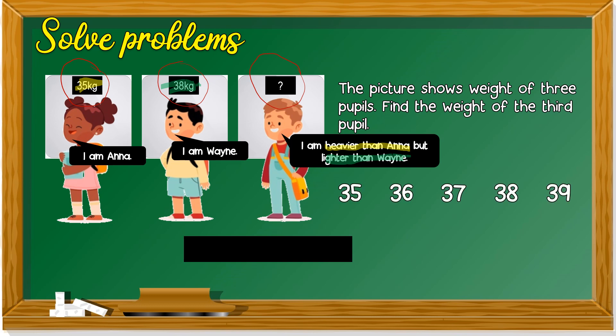We can put it like this: 35, 36, 37, 38. So the third pupil is heavier than Anna. Anna is 35 kilo, so he could be 36, 37, 38, 39 kilo, but lighter than Wayne. Wayne is 38 kilo, so lebih ringan dari Wayne is either 37 or 36. So it could have two answers: he is 36 kilo or 37 kilogram.